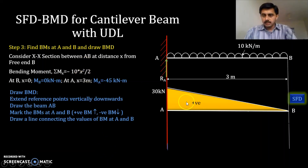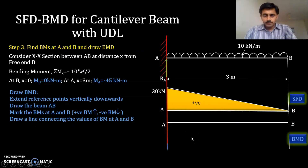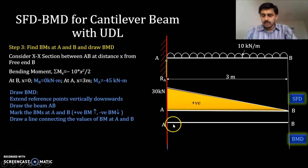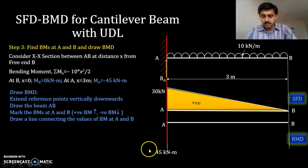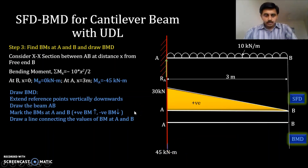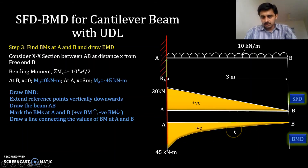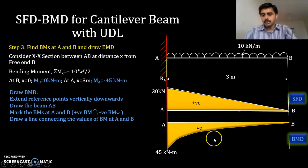To draw the bending moment diagram: extend A and B, draw the beam AB. Since the bending moment value is −45 kN·m, draw below the beam. Represent the values: at B it is 0, at A it is 45 kN·m (the negative sign is already indicated by drawing below the beam). Draw a parabolic line connecting 45 kN·m at A to 0 at B. The bending moment here is negative.